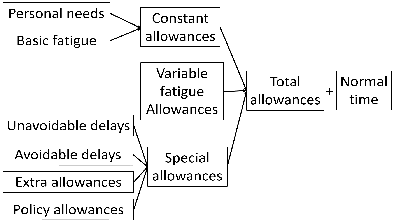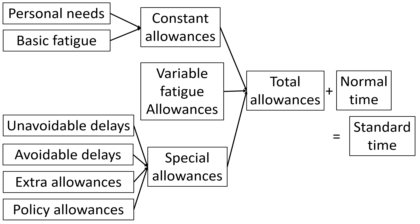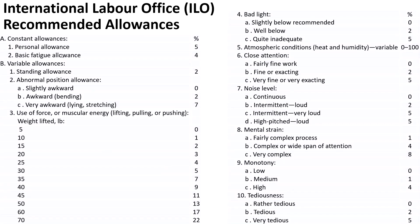You add all the different kinds of allowances to get the total allowances, then add that value to the normal time to calculate the standard time. Here is a list of constant and variable allowances provided by the International Labor Office, expressed as percentages.